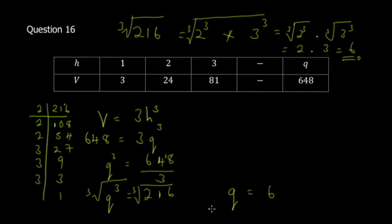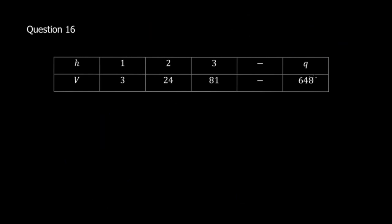So q equals 6. Don't get stuck if you don't know a cube root — use the prime factorization method. Let's move to question 17.